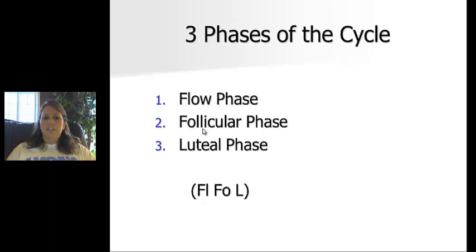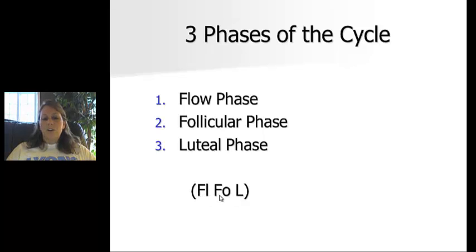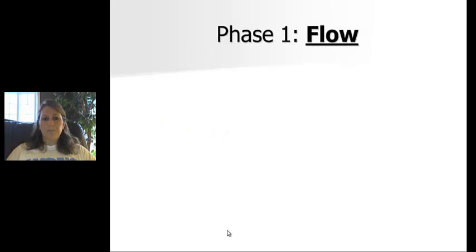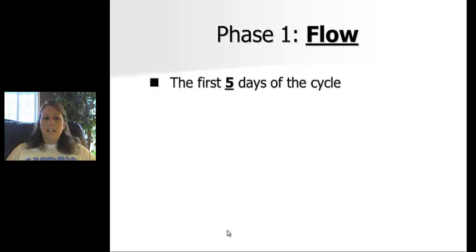There are three phases of the cycle: the flow phase, the follicular phase, and the luteal phase. I'll go through each one and talk about the hormones. A mnemonic device to help you remember the order is just the first couple of letters of each: FL, FOL — that helps you remember the order.